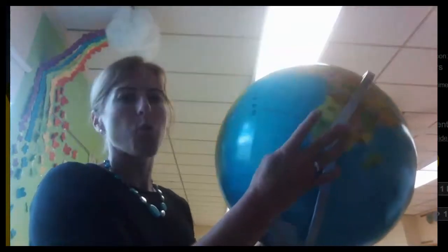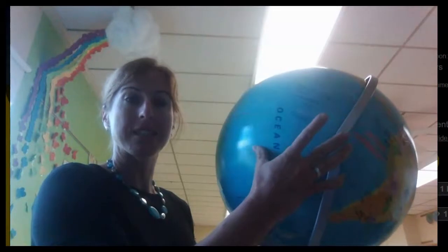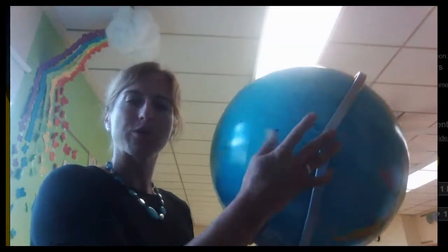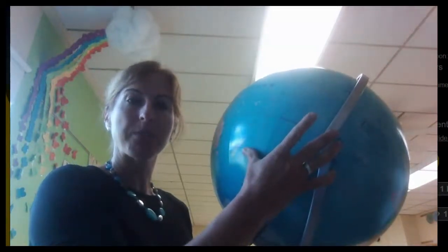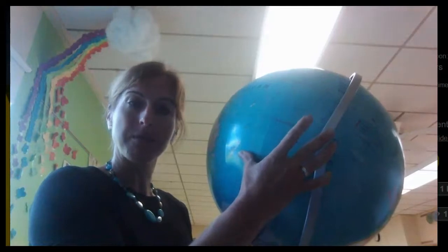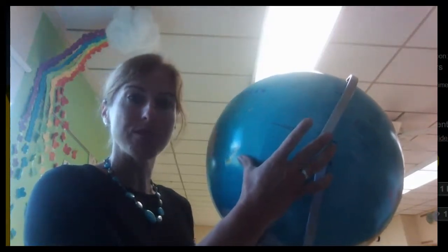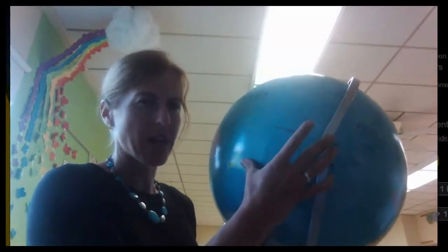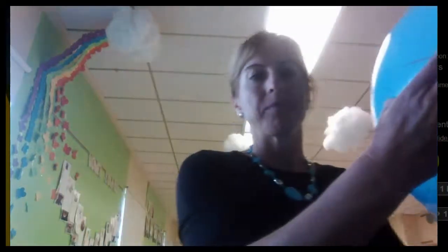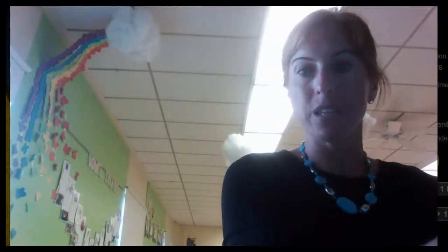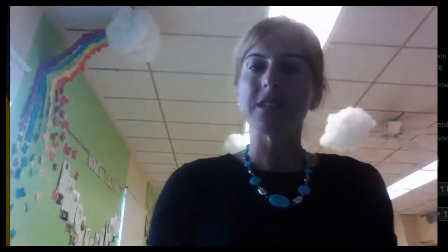And the earth rotates. That means it spins. When it goes around, it changes the position of where we see the sun to be. It also changes the position of where we see the moon to be. We'll learn about that later. But because the earth rotates, we are able to see the sun at different points. Let me show you.